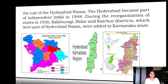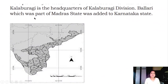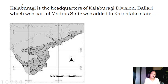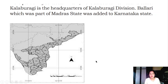Kalburgi is the headquarters of the Kalburgi Division. Ballari, which was part of Madras state - what we now call Chennai - was added to Karnataka state during the Karnataka integration. Before 1956, Ballari was not under Karnataka state; it was under the Madras state.